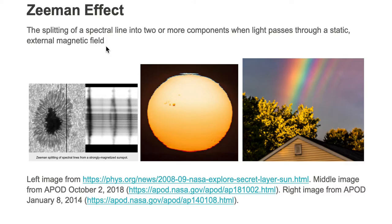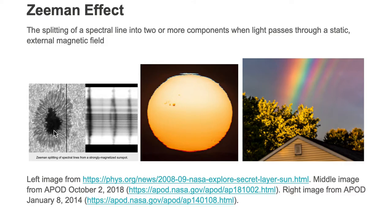Where is the static external magnetic field coming from? Let's go back to the central image where we are looking at the sun and focusing on the sunspot region. The sunspot region is a region of external magnetic field. The sunlight passes up from the interior through the surface. Outside the sunspot region, there is no strong external magnetic field — it's only in the central sunspot region where we have this external magnetic field, and the light passes through coming up towards us.